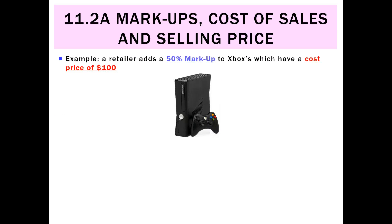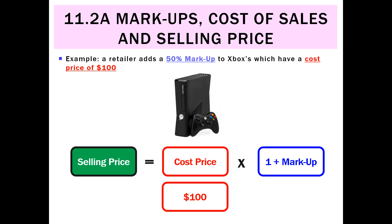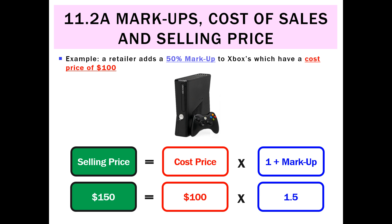That's quite straightforward — at a 100% markup we basically double everything. But if we get a markup that's not as simple, e.g. a 50% markup, we still use our formula. Here we're selling an Xbox that cost $100 at a 50% markup. We take the cost price times (1 plus the markup): $100 times (1 plus 0.5), which is $100 times 1.5, giving a selling price of $150.